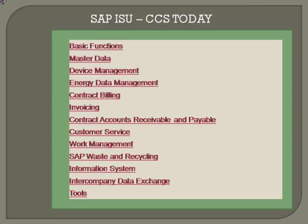The FICA module provides a separate subledger accounting system exclusively designed for these three vertical industries. Thereby we can handle postings for large consumer volumes, which may be in the millions. We also have device management, billing, invoicing, and customer service — which is basically the front office mapping customer service activities — and work management.